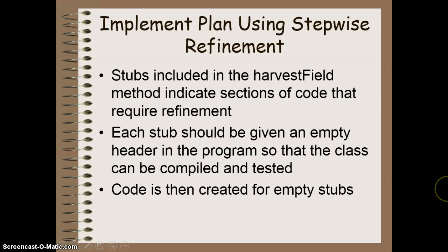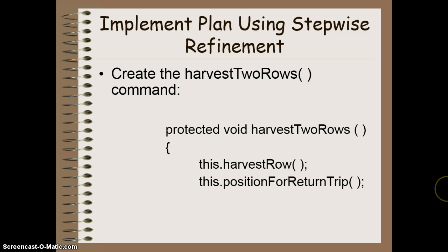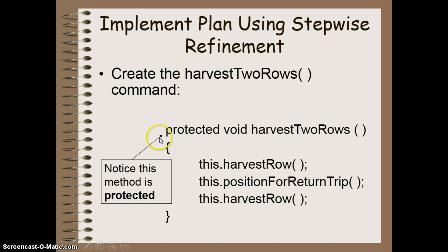As I go through, I start to create code for the empty stubs. For 'harvest two rows': I'll harvest one row, position myself for the return trip, then harvest one row again. I'd break those down with stubs for 'harvest row' and 'position for return trip.' You'll notice I'm making this method protected because it's a helper method — I'd never want someone to call it on its own. I want users of the HarvestBot to just harvest a field. Making it protected means only the HarvestBot can run this internally, and anything that inherits from the HarvestBot can also use these methods.